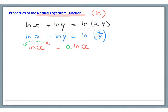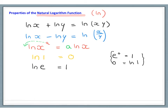We know that ln of 1 equals 0. Think about why: e to the power of 0 equals 1, so 0 equals ln of 1, or log to the base e of 1. We also know that ln of e equals 1, because e to the 1 simply equals e, so 1 equals log to the base e of e, or ln of e.